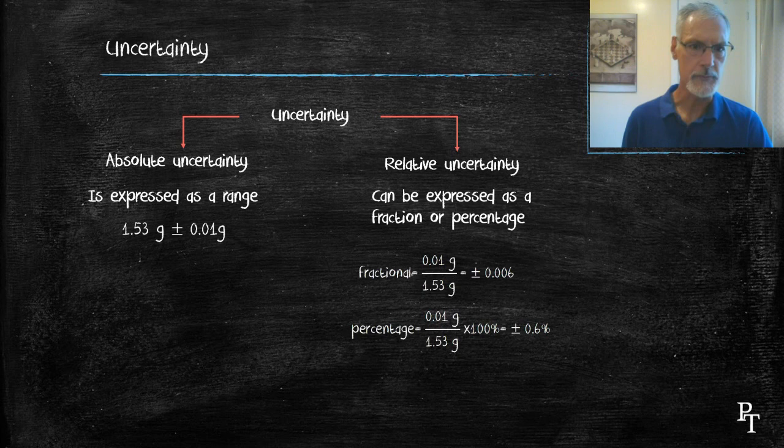A little comment here about something called agreement. When one records data, you want to make sure that you have agreement between the uncertainty and the data you're recording. So here, my 0.01 grams is good to the one-hundredths column. That means that my recorded data must also be to the one-hundredths or to the two decimal places. That, we say, has good agreement.